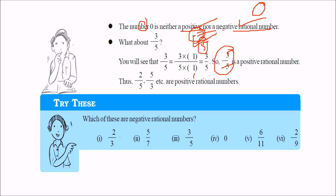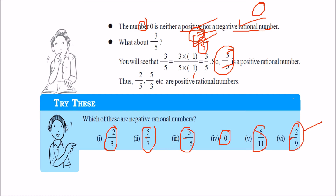Looking at the number line: the extended line shows minus 2 by 3, which is negative. 5 by 7 is positive. Minus 3 by 5 is a negative rational number. 0 is neither negative nor positive. The extended positive side shows a positive rational number. Minus 2 by 3 is a negative rational number.